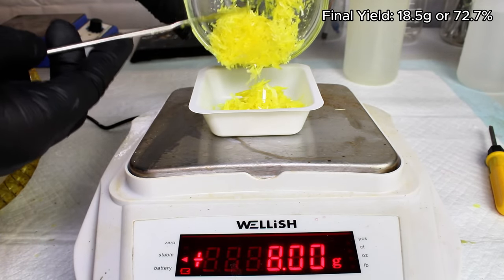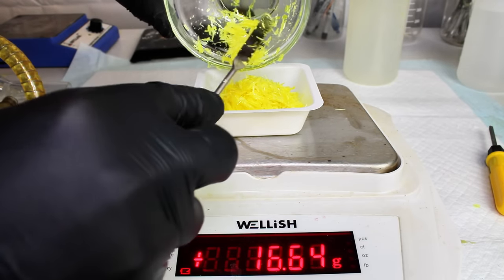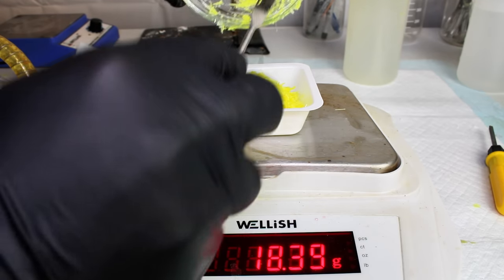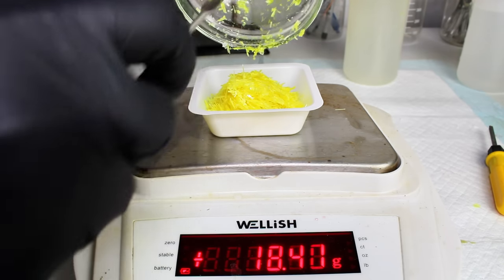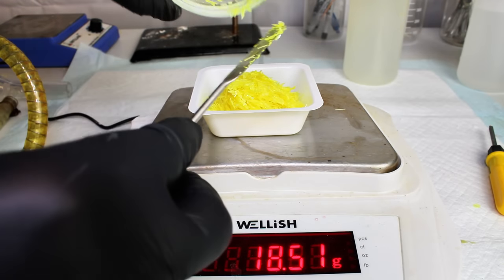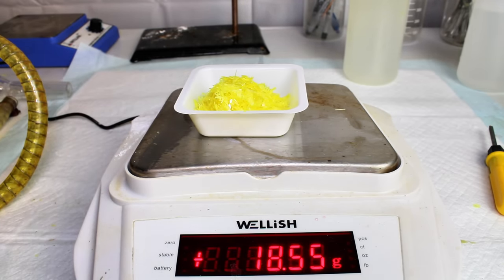Now keep in mind, in addition to storing this stuff slightly damp, you want to store it only in glass or plastic containers. And this is because, as I mentioned earlier, picric acid is very prone to forming metal picrates if stored in a metal container, which are extremely shock sensitive explosives and very dangerous.